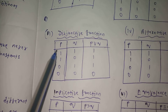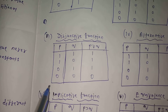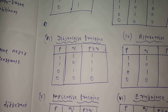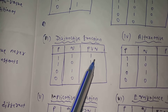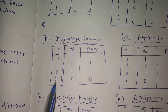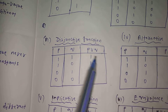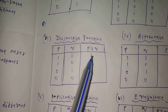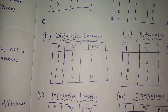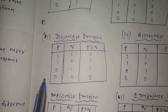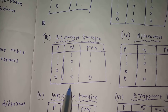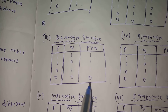Disjunctive function: the value of P disjunction Q is false only when both P and Q are false. In all other cases it must be true. If both P and Q are false, then P disjunction Q is false.